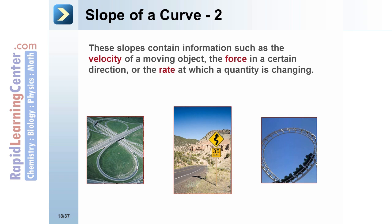These slopes contain information such as the velocity of a moving object, the force in a certain direction, or the rate at which a quantity is changing.